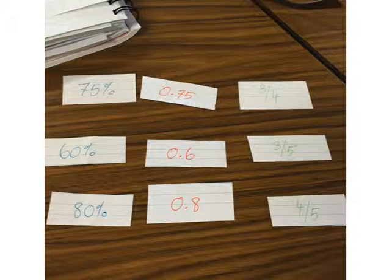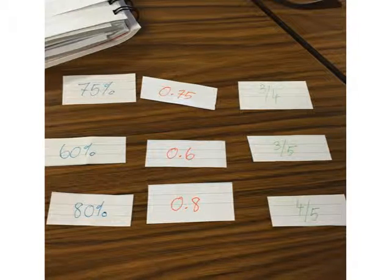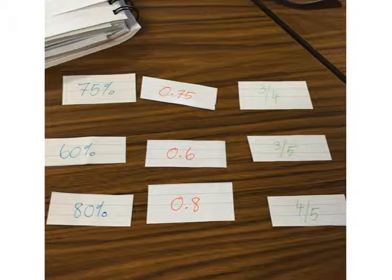I would also encourage them to make harder numbers. Here there's 60s and 75s, which are multiples of 5 and 10, but I would encourage them to make maybe 33% or something a lot more difficult that they think their classmates would be a bit more challenged.